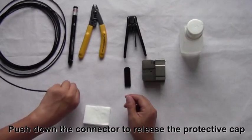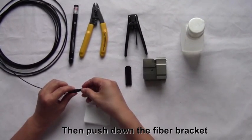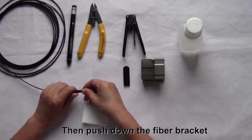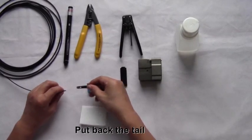Push down the connector to release the protective cap. Then push down the fiber bracket. Rotate the tail. Release the fiber. Put back the tail.